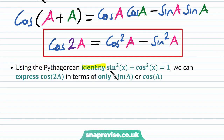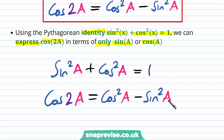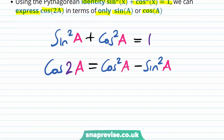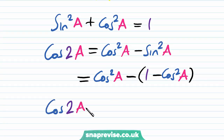Using the Pythagorean identity sin squared x plus cos squared x equals 1, we can express cos of 2a in terms of only sin of a or cos of a. If we want cos of 2a only in terms of cos of a, we replace sin squared of a with 1 minus cos squared of a. This gives cos squared of a minus (1 minus cos squared of a), and therefore cos of 2a equals 2 cos squared of a minus 1.